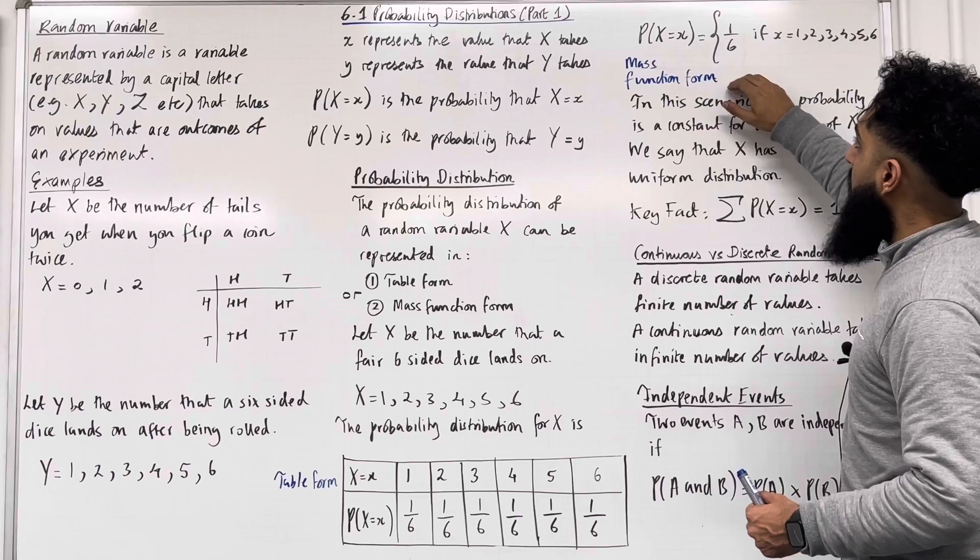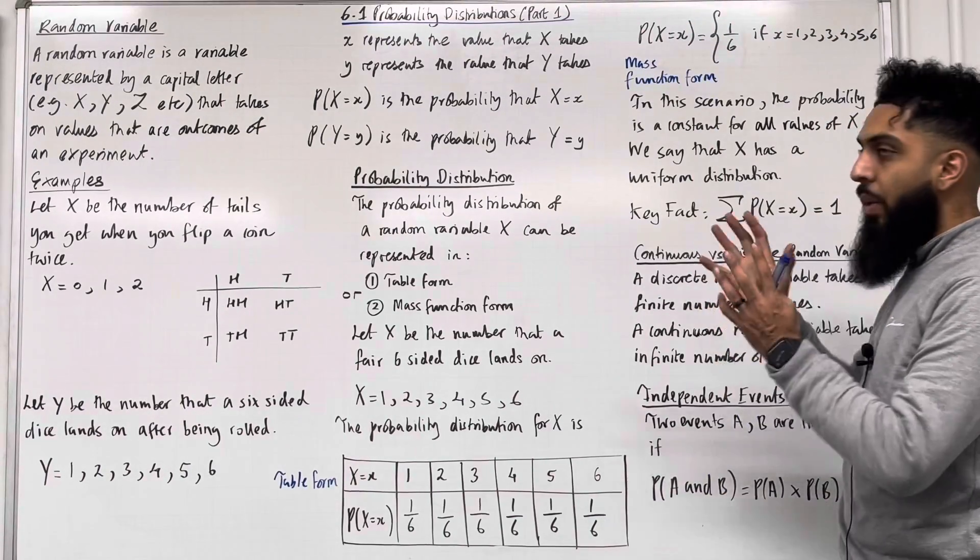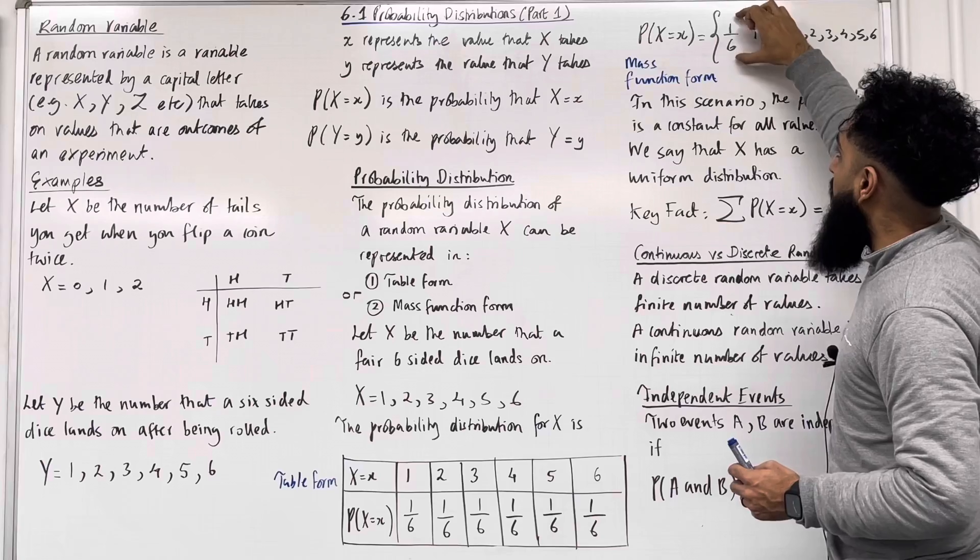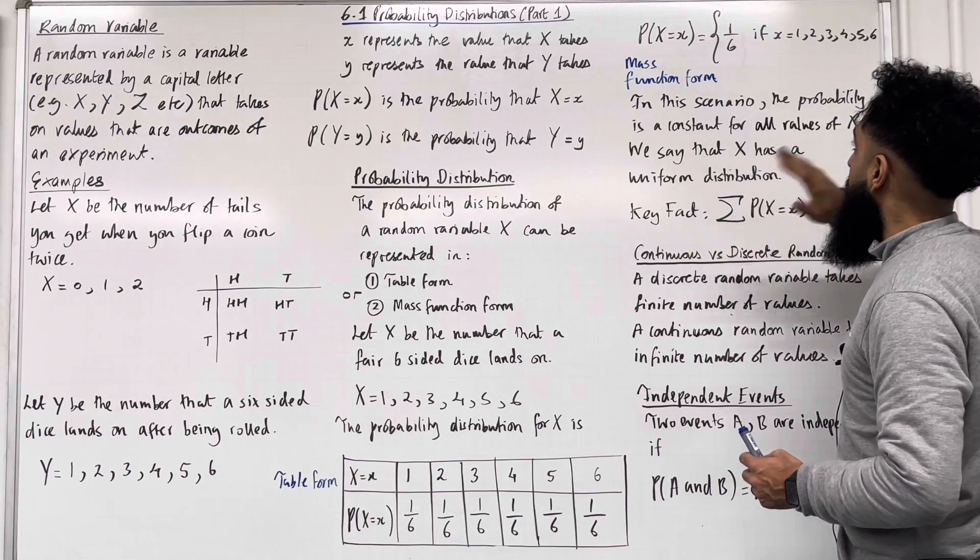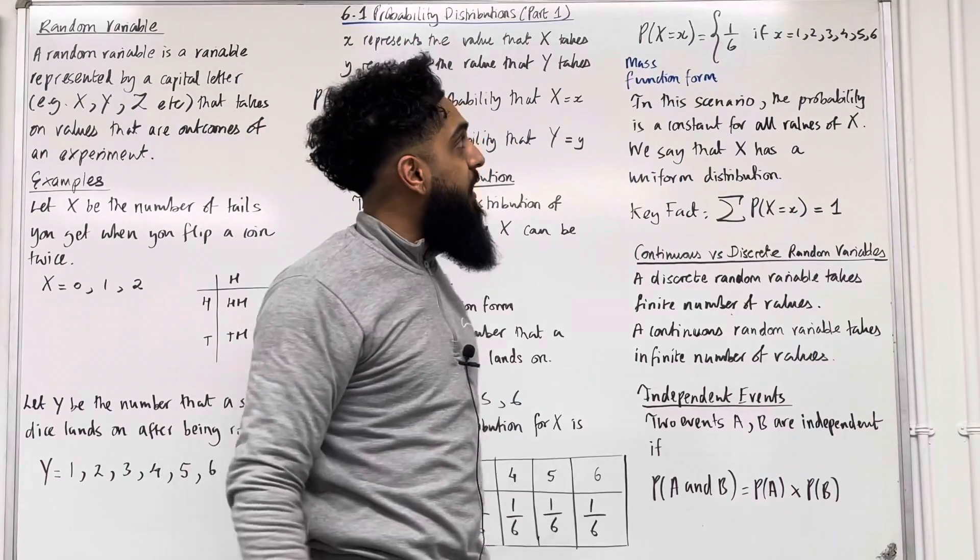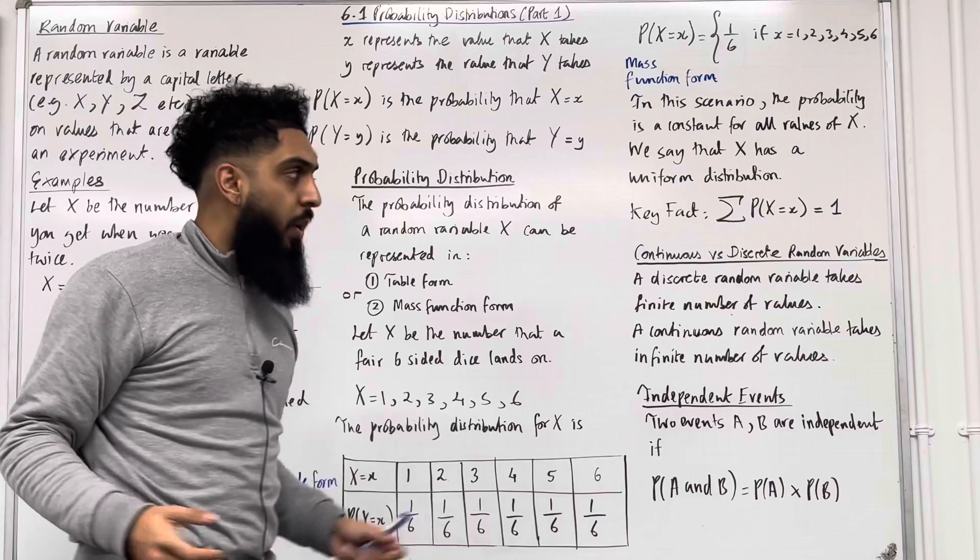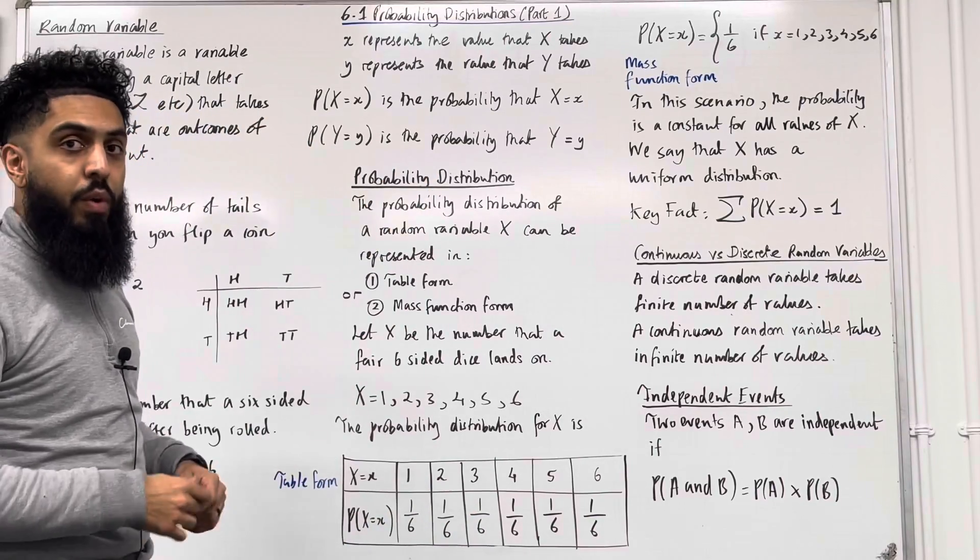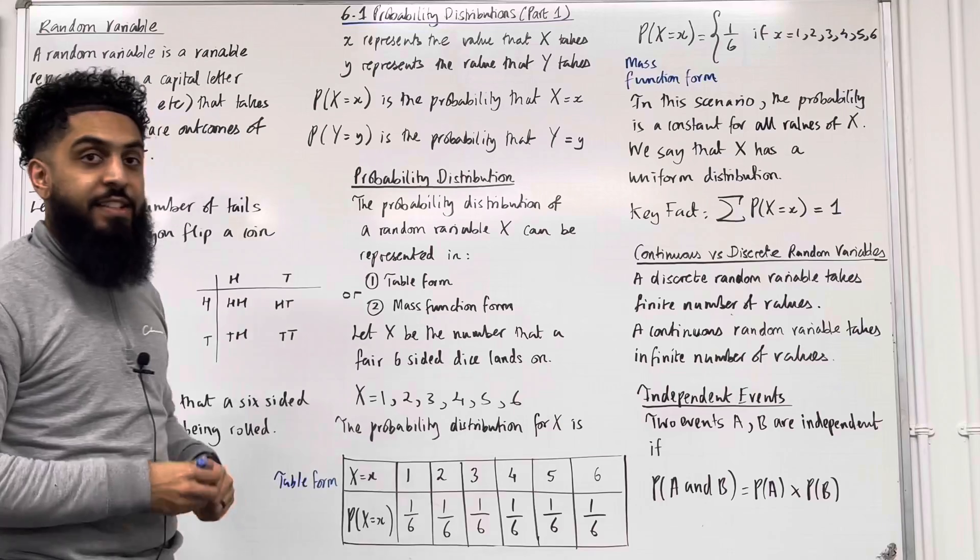Now in mass function form we write: the probability that capital X takes on the value lowercase x is equal to 1 over 6 if lowercase x is equal to 1, 2, 3, 4, 5, or 6. So that is a probability distribution for X in mass function form. In this scenario the probabilities are constant for all values of capital X, as you can see, so we say that X has a uniform distribution.